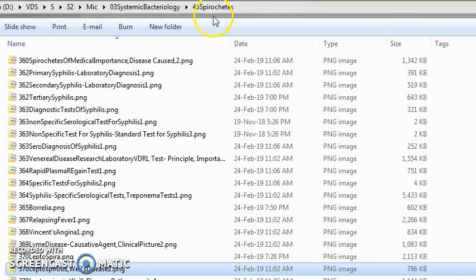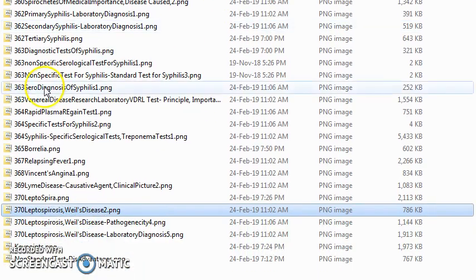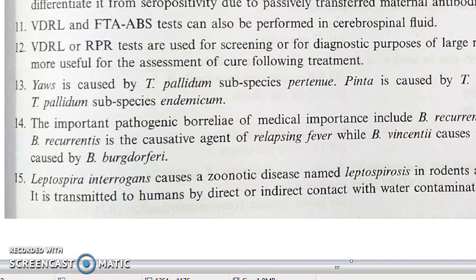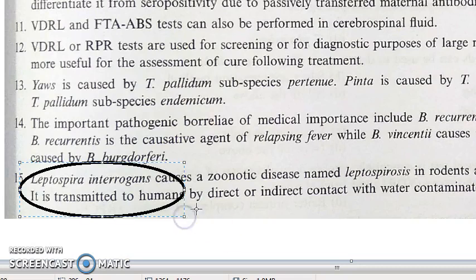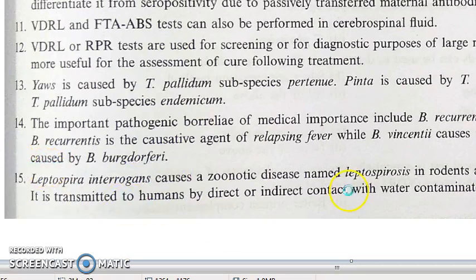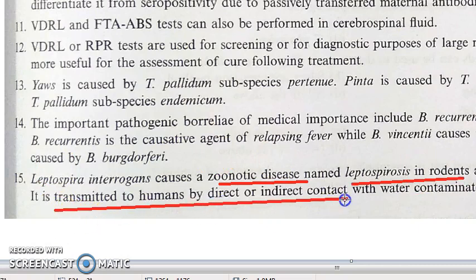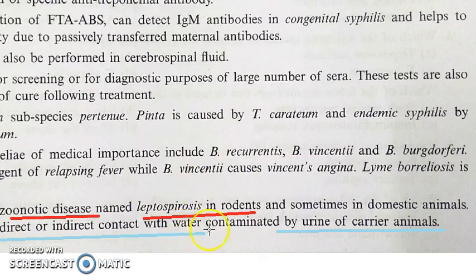Leptospirosis, also called Weil's disease, is very important and comes under spirochete bacteria. Leptospira interrogans causes this zoonotic disease called leptospirosis. In rodents and sometimes domestic animals, it is transmitted to humans by direct or indirect contact with water contaminated by the urine of carrier animals.